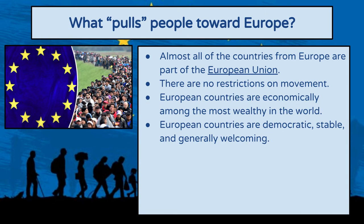European countries are mostly democratic, stable, and generally welcoming. In the next lesson I'm going to talk about ways in which that may be changing, but most European countries elect their own governments and are responsive to their citizens. They are stable, meaning they don't have excessive crime rates, and they are generally welcoming towards immigrants and outsiders rather than fearful of them.